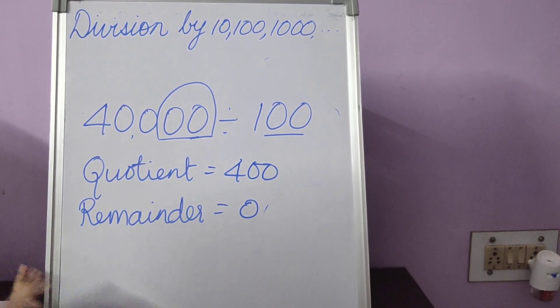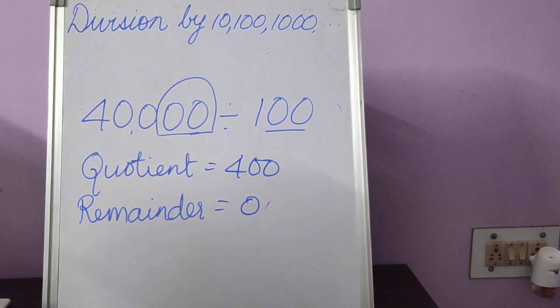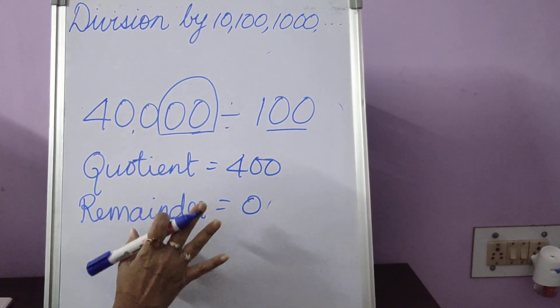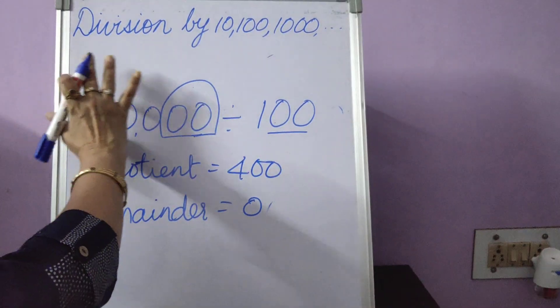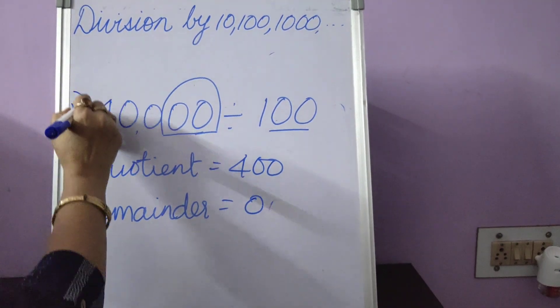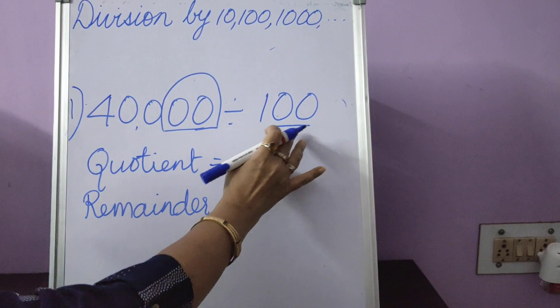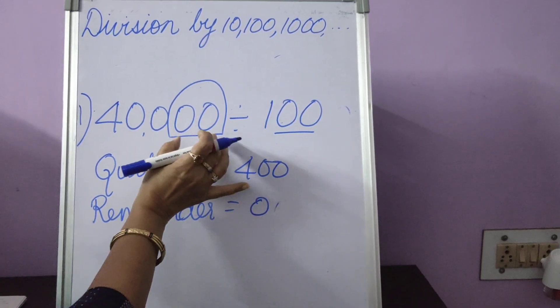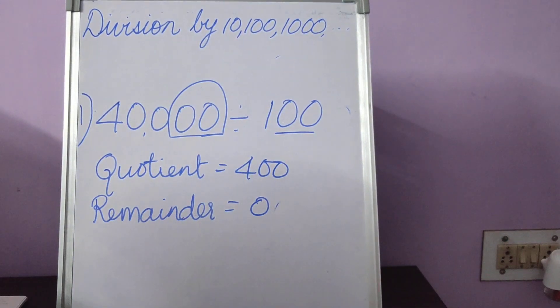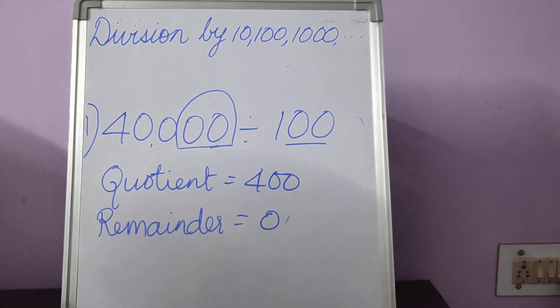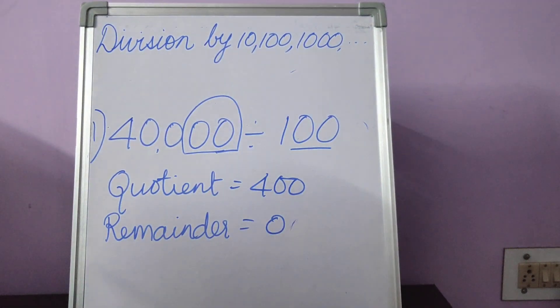So this is, children, your division by 10, 100 and 1000. Now this is exactly the way you are going to do it in your notebook. Write the date, classwork. Suppose this is sum number 1. Just copy the sum. Follow the steps that I told you. Count the number of zeros. Count the number of places. Put it in a circle. And this is, children, division by 10, 100 and 1000.